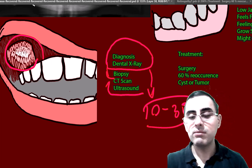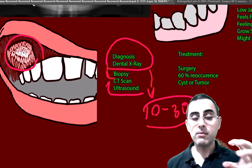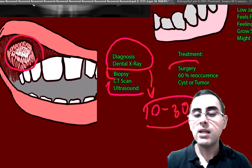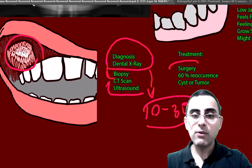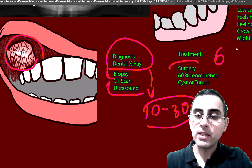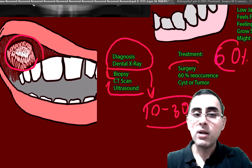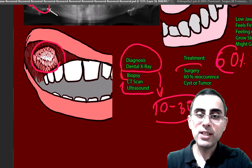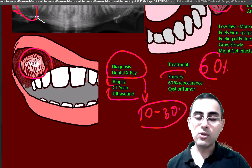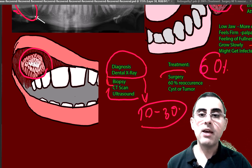CT scan and ultrasound are also possible for a clearer picture and clearer borders of this growth. Treatment is surgery. However, the cure rate is not high — in 60 percent of cases this tumor recurs, so the recurrence rate is very high and it needs constant treatment and constant observation.